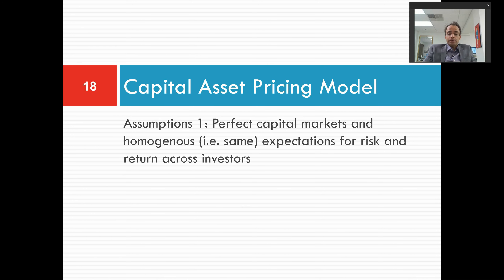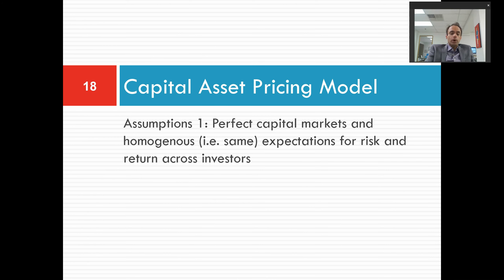Beta is going to be asset-specific. We'll have a beta estimate for shares in Domino's, shares in McDonald's, corporate bonds issued by Ford, and wine produced by Beringer wineries — any individual asset. But the market risk premium component is a market-wide parameter. The market risk premium estimate doesn't vary depending upon any characteristics of the individual asset. So whether estimating a discount rate for Domino's, McDonald's, Ford bonds, or Beringer wines, we'd use the same estimate for the market risk premium.